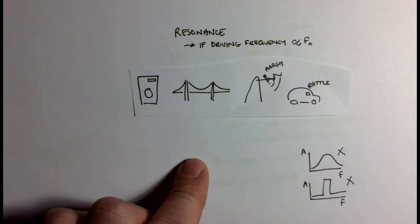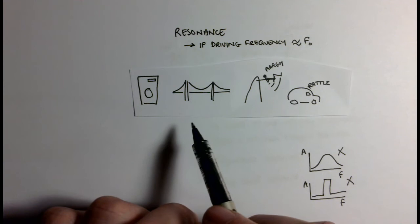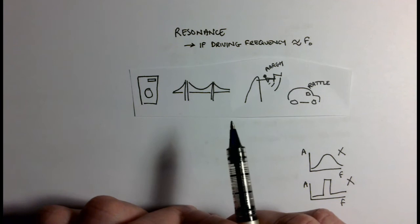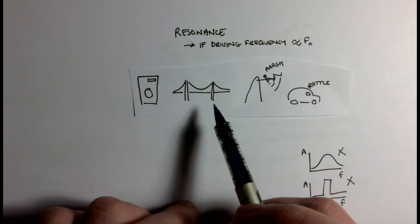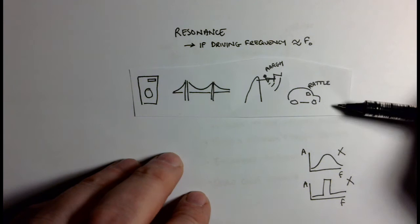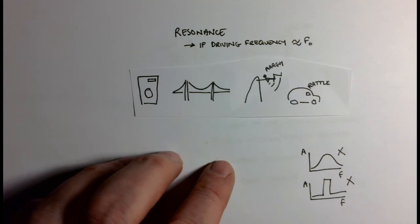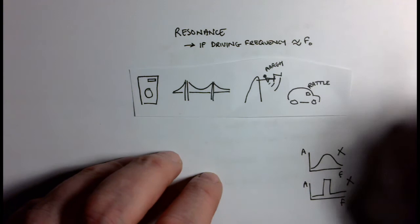Another example is this car. Engineers spend an absolute fortune and huge amount of time trying to avoid resonance, because different parts of the car will have different natural frequencies. The driving frequency in this case would be due to driving across a rough road, and the vibrations from the road provide this driving frequency. If that driving frequency is close to the natural frequency of, say, the dashboard, the dashboard has increased amplitude oscillations causing the rattle.